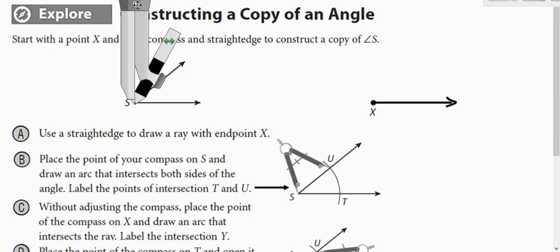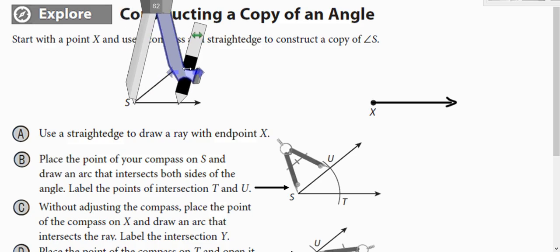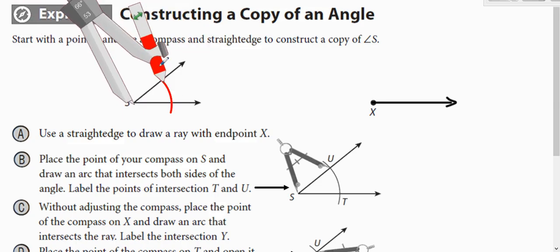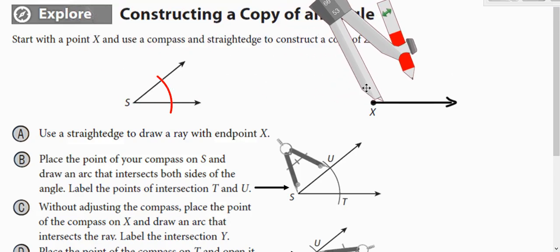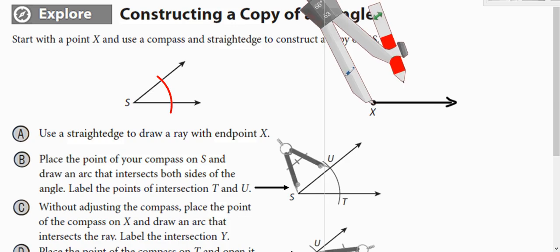Now you need your compass. You're going to place the point of the compass on the vertex of the angle, the point of the angle. You're going to stretch out your compass just a little ways, and we're going to make an arc that touches both sides of the angle. So just like that.